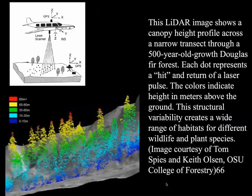This is a LiDAR picture of an old growth forest. This LiDAR image shows a canopy height profile across a narrow transect through a 500-year-old Douglas fir forest. Each dot represents a hit and return of a laser pulse, and the colors indicate the height. Notice we have different colors and different heights — a multi-layered canopy in that forest.